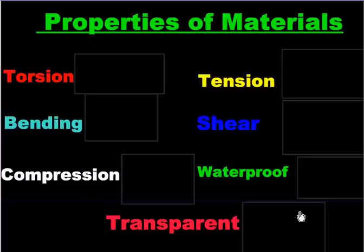All materials have properties, and these properties are going to allow us to decide if the material is going to be useful to build with or if it's going to be a material that we should avoid entirely. The properties that we need to know in grade 3 are these seven.